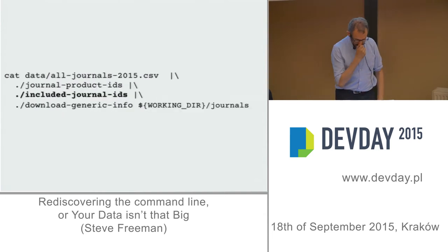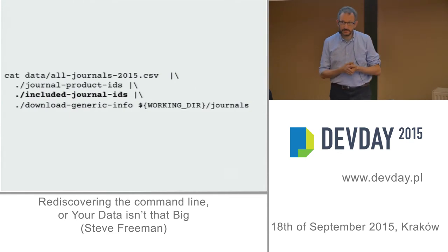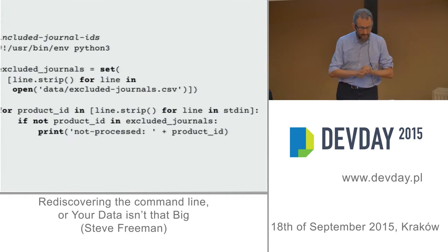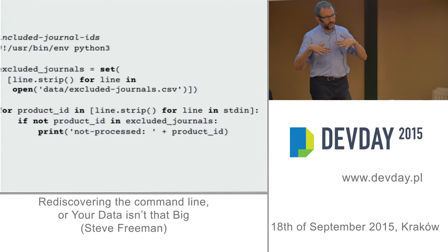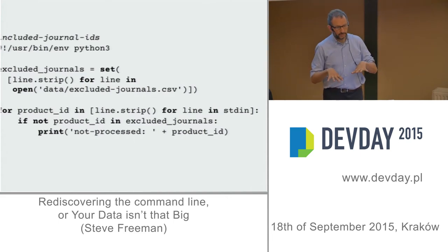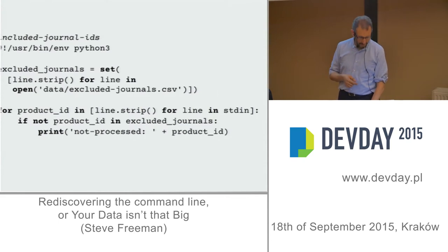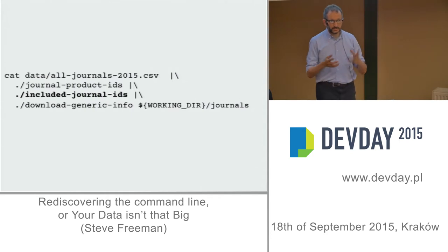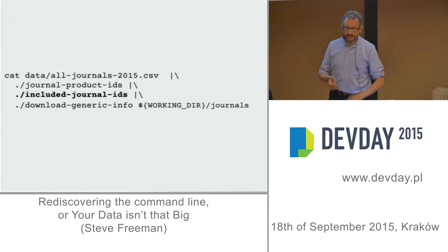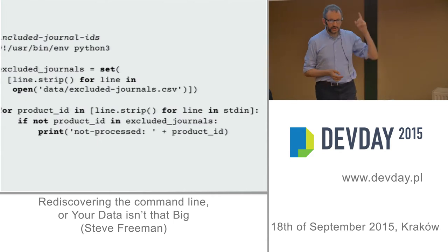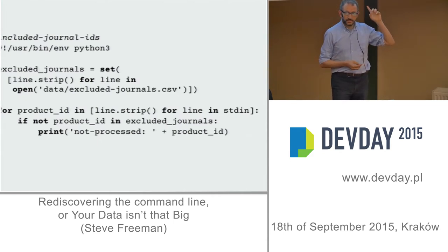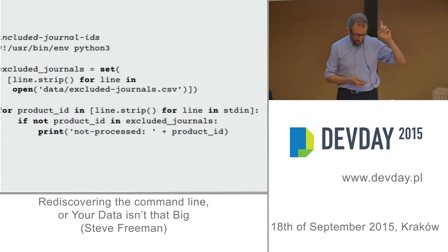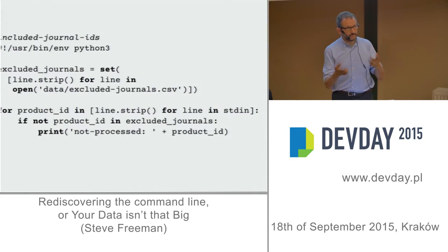That gives us a sequence of IDs. Next, we figure out which journals are irrelevant — not relevant to us. Here's a little Python script. The great thing about it is you're in the same world, so when things get a bit complicated, just drop into Python. In Unix, you can make it executable — you don't need the .py on the end — which means at that level, it's just a program. You don't care how it's implemented. What this does is push out a stream of relevant product IDs with a 'not processed' flag. One of the things about doing it this way is it's very easy to test from the command line — you can pump text in and catch text on the way out.